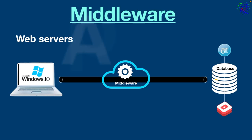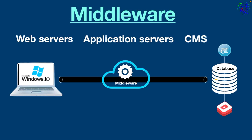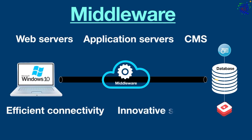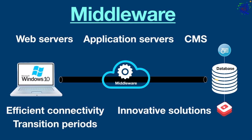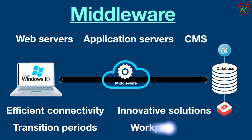Middleware is used in web servers, application servers, content management systems, and other tools which support application development and delivery. The main purpose of middleware is to foster interaction between different applications. By using middleware, businesses can have efficient connectivity, innovative solutions, more concise transition periods, and easily accessible workplace tools.